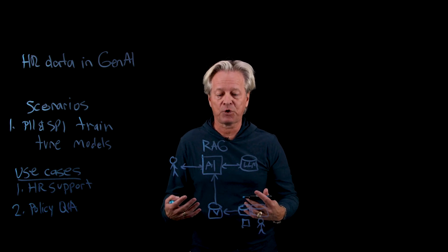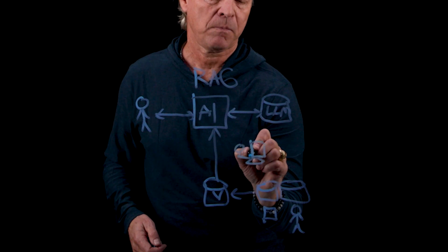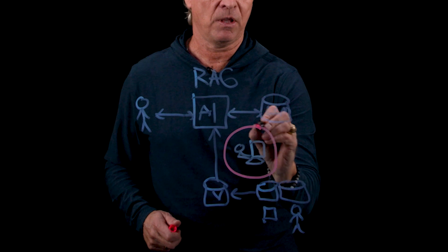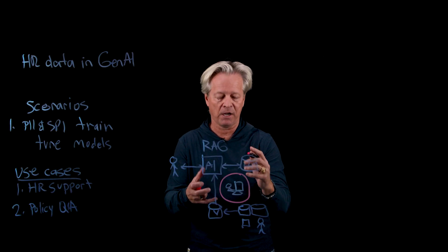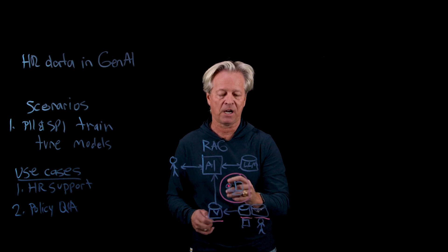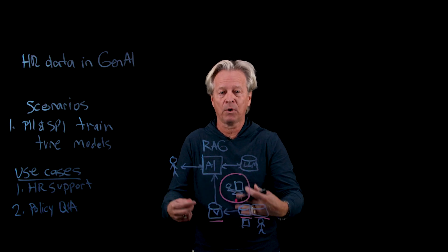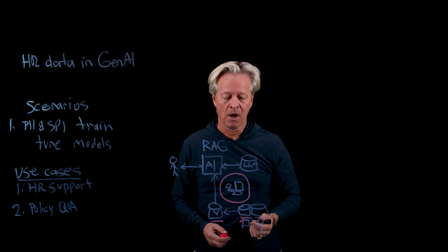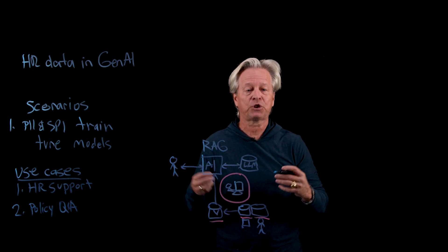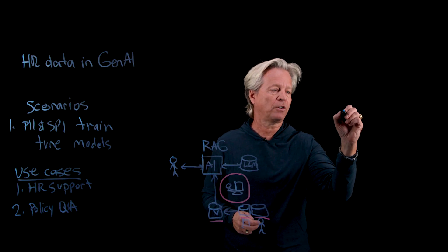Since we're looking at the training part of this, we're going to have a developer in here that's building our application. They're looking at the data that they're going to be training off of. This contains sensitive information that's flowing into our vector database. We really want to look at how we're going to protect this data when we're doing the training and tuning of these models so that we can support our use cases. To address this, we're going to come up with a set of strategies to help us best protect the HR data when we're doing our training.